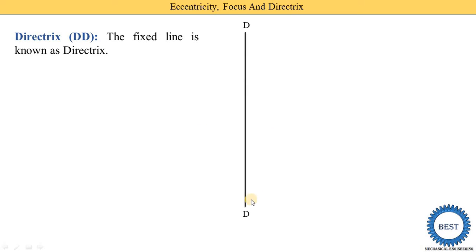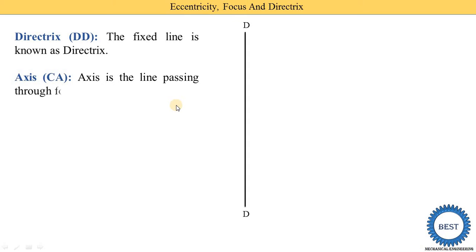First we understand what is directrix. Directrix is the fixed line. So one fixed line is called the directrix. Here you see this one vertical fixed line, denoted using the term 'dd', so in the bracket dd is written.